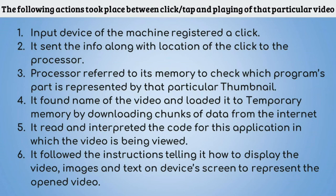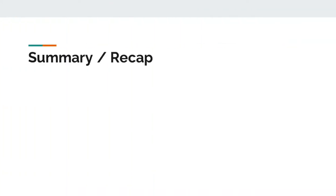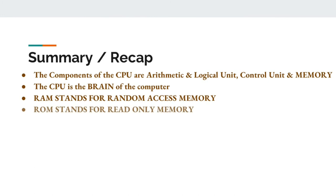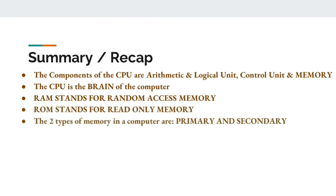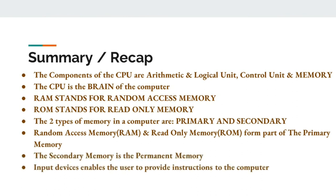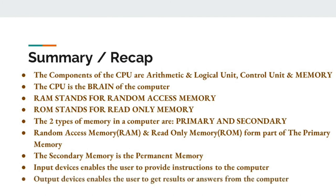That brings us to the end of another unit. Let's revise. The components of the CPU are Arithmetic and Logical Unit, Control Unit and Memory. The CPU is the brain of the computer. RAM stands for Random Access Memory, ROM stands for Read Only Memory. The two types of memory in a computer are Primary and Secondary. RAM and ROM form part of the Primary Memory, and the Secondary Memory is the Permanent Memory. Input devices enable the user to provide instructions to the computer. Output devices enable the user to get results or answers from the computer.